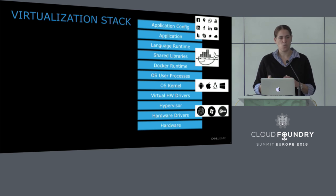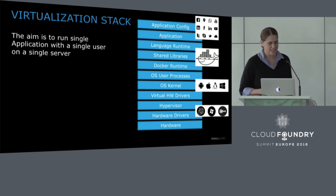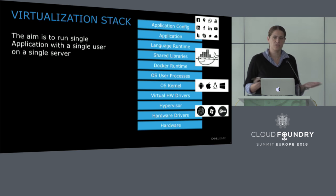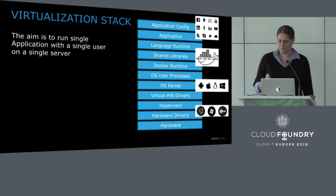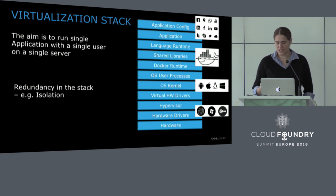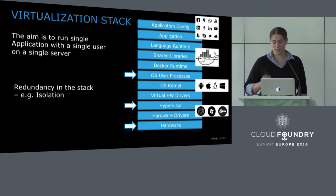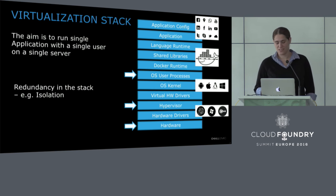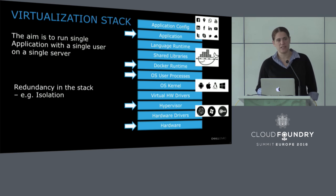The question is, what are we actually trying to do? What we're trying to do is run a single application with a single user on a single server. That's what we're doing today in the cloud — we're not sharing anymore. We dedicate one container, one server for your application. And if you look at this stack, it's kind of overkill. You have a lot of redundancy — isolation on the hardware layer, on the hypervisor layer, on the OS user processes, on Docker, and eventually on the application level.